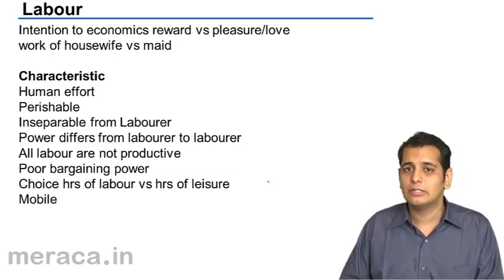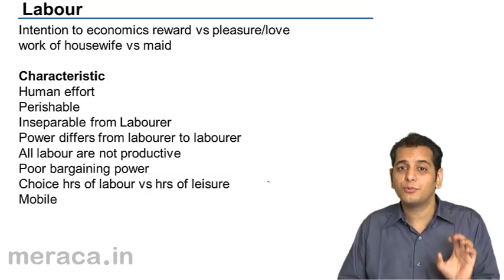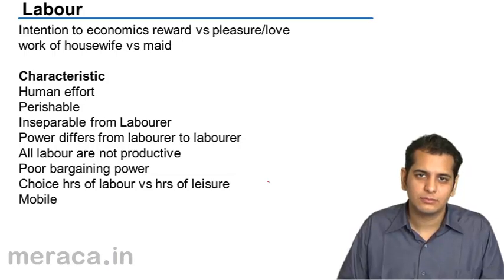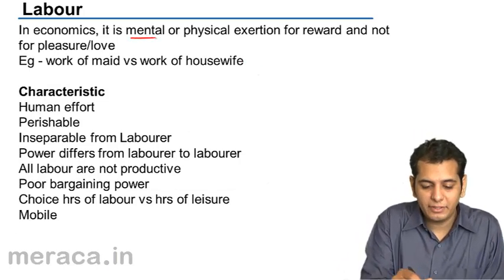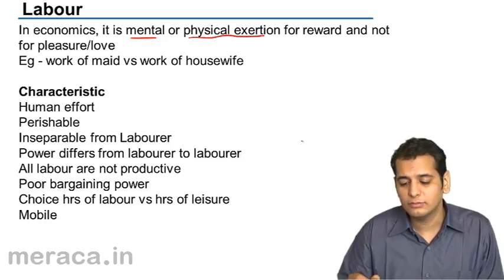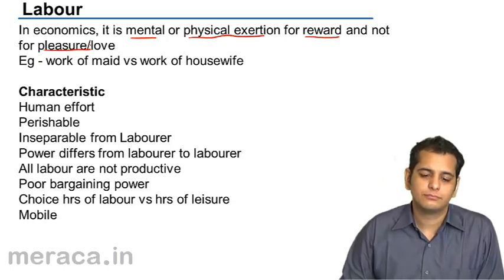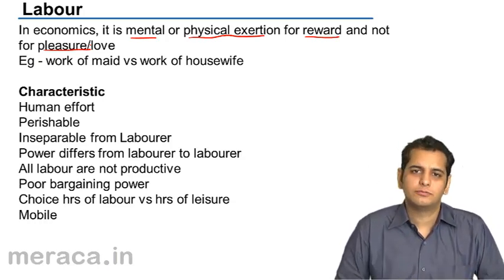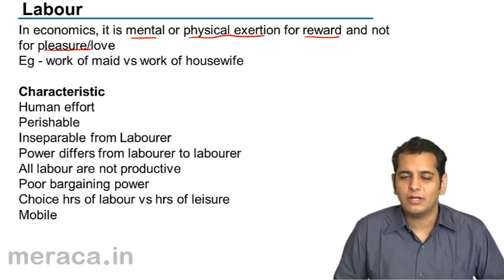The next factor of production is labor. What do we mean by labor? Labor is that factor of production which is contributed from the human side. It is the manual factor of production, also called the man force. Labor means mental or physical exertion done for a reward, and not for the sake of pleasure or love — not doing something just for pleasure or out of love.